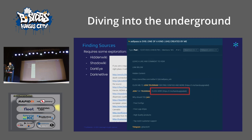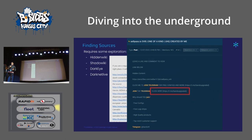Often, threat actors on a normal clear web source will advertise another source they're active on. In this example, a threat actor was advertising their own Telegram channel where they were posting data leaks and credential stuffing combos. Oftentimes you just need to participate on some of these forums and stay up to date on posts to find links to other sources that threat actors frequent.